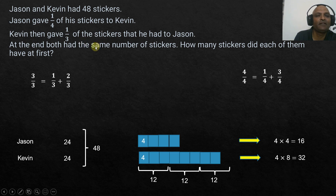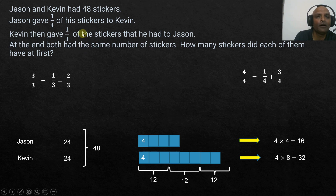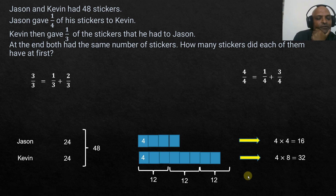In this problem, we found a point where we could establish the relationship between the two quantities — at the final end — then went one step at a time back to the beginning to solve it. Hope it was helpful. If you have questions, drop them in the comments. Do like, share, and subscribe. Have a great day and happy learning!